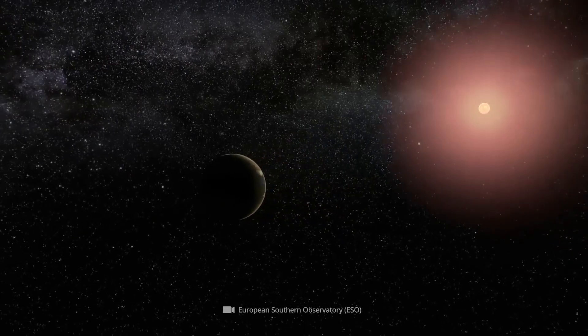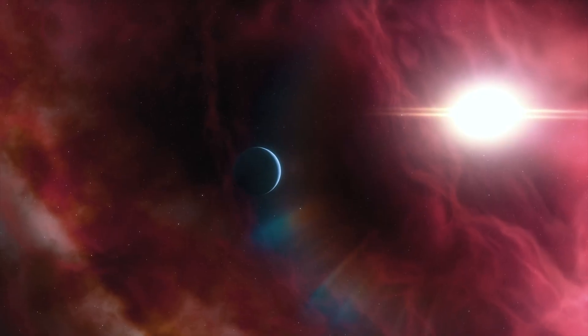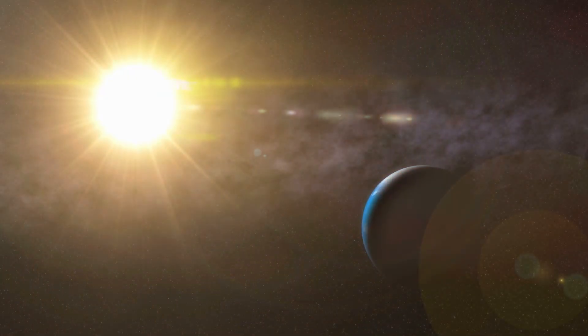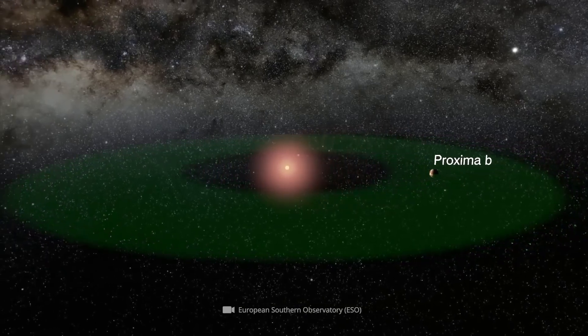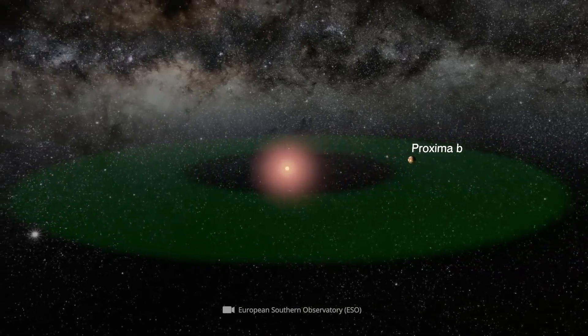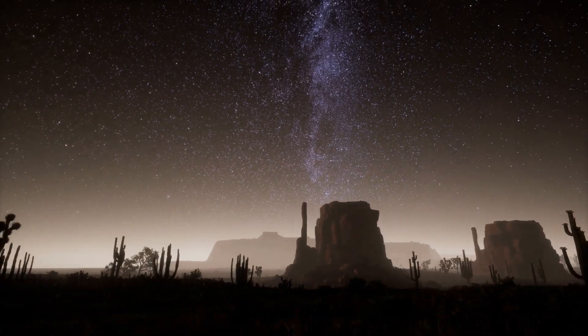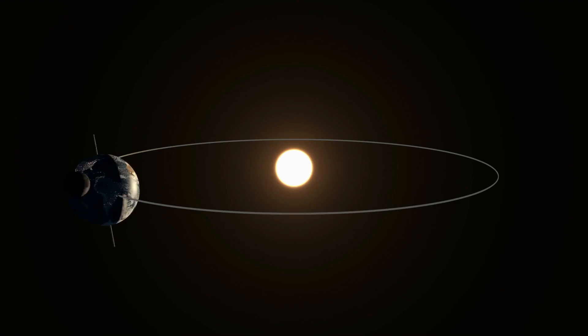Although the host star, Proxima Centauri, is much smaller than our sun, it should be noted that the distance between the exoplanet and its central star is much smaller than the distance between the sun and the Earth. In detail, the distance is given as 0.0485 astronomical units. Again briefly, an astronomical unit corresponds to the approximate average distance between sun and Earth, thus just over 90 million miles.